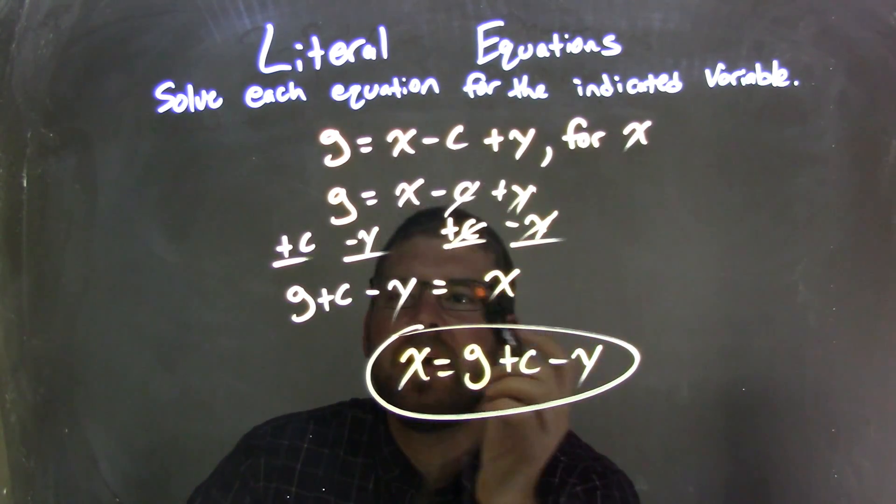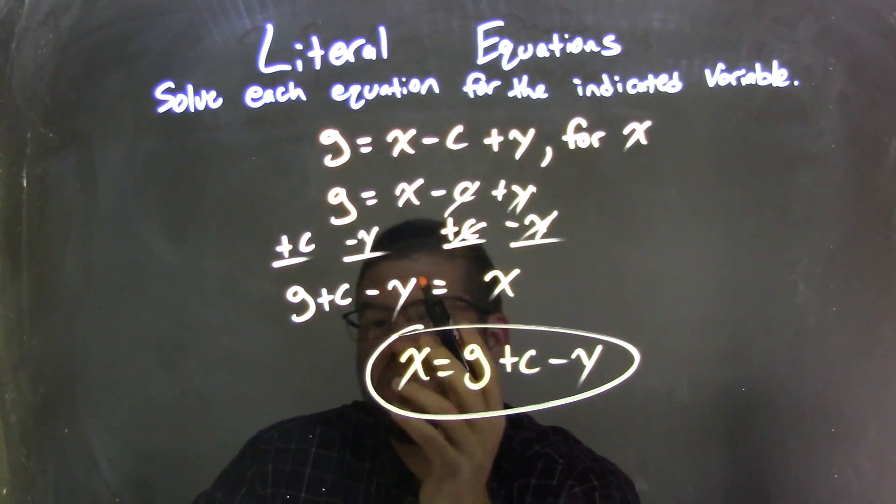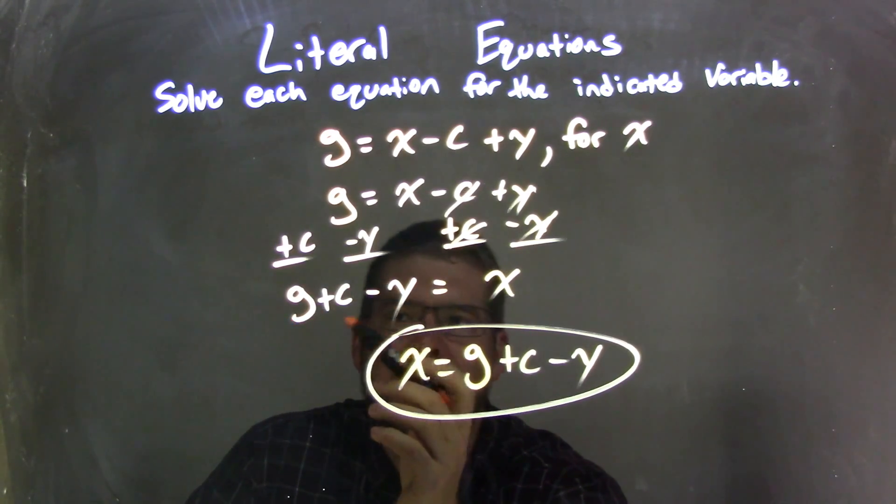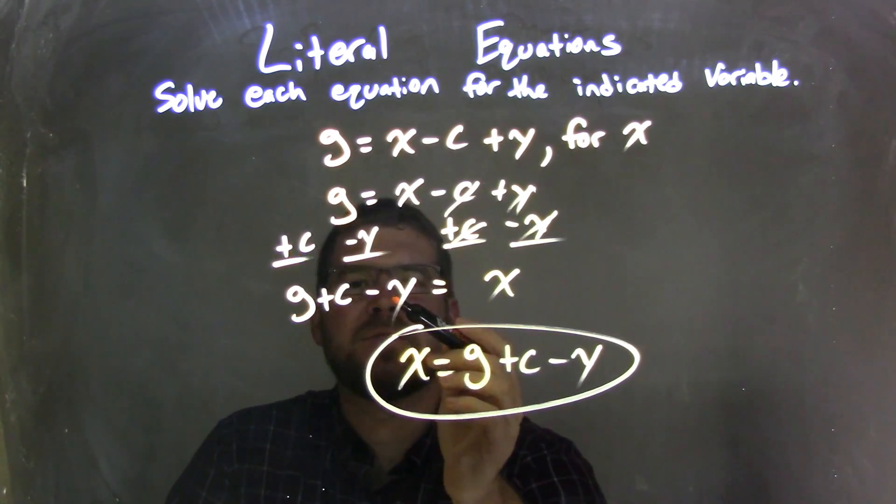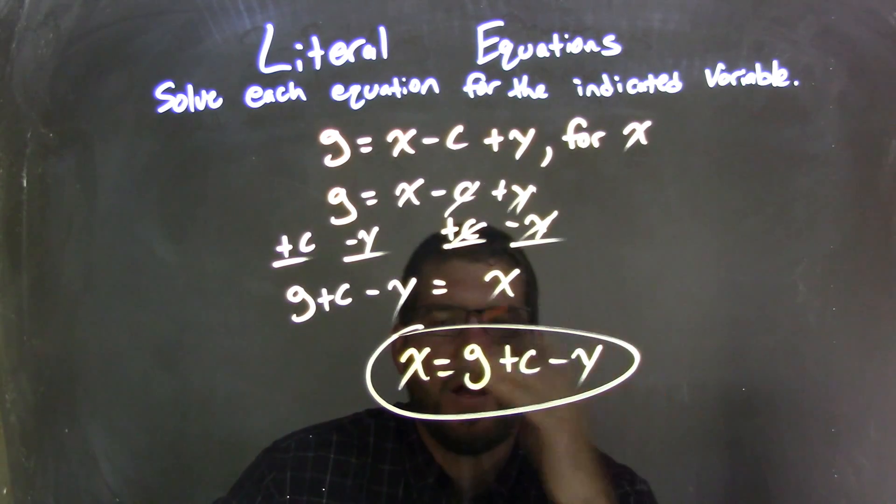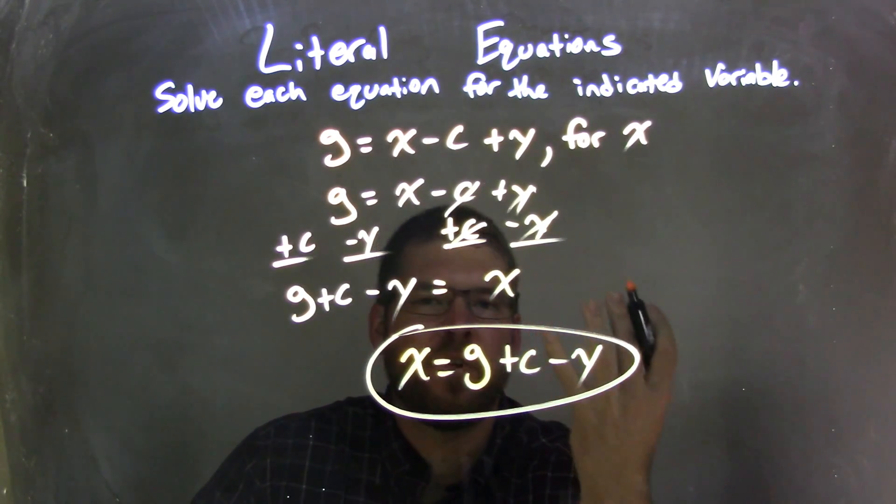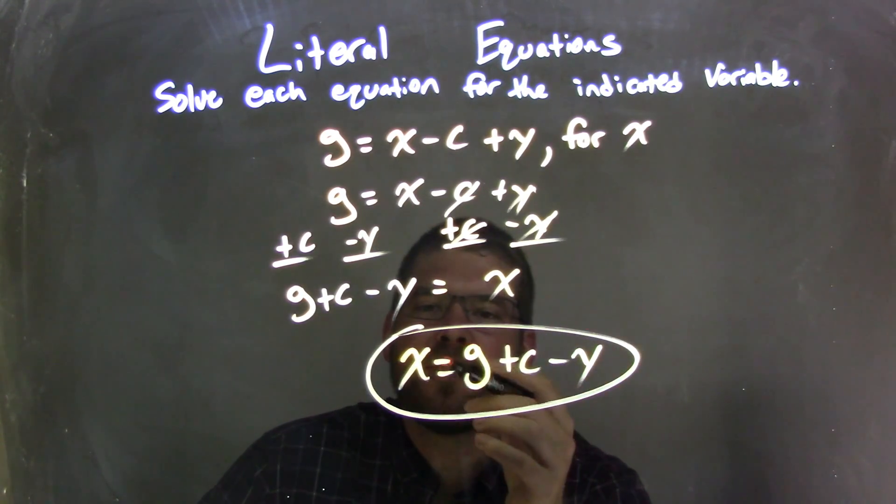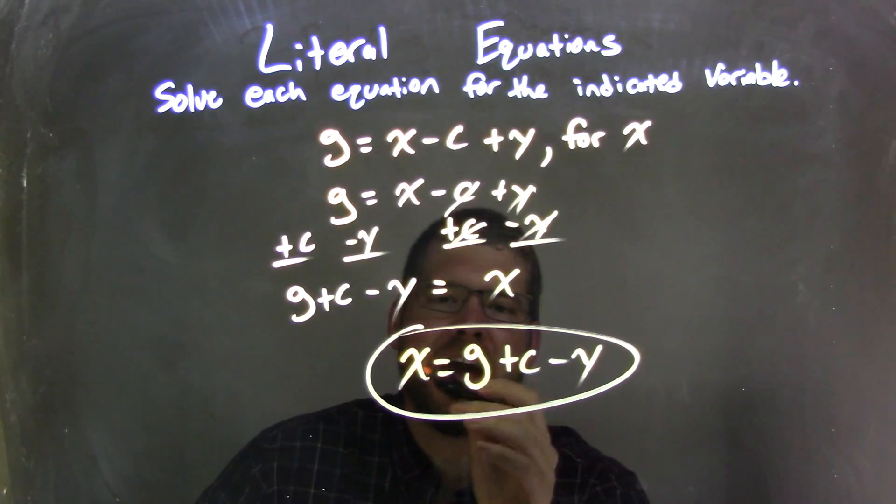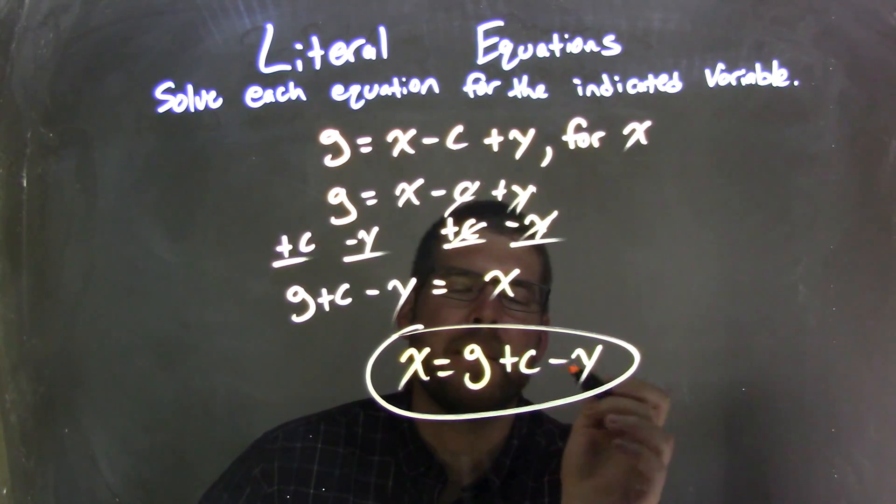That left me with x on the right, and then on the left-hand side, nothing can combine, so we just wrote it all out here, g plus c minus y, that equals x. And then I rewrote this, having x come first, because that looks nicer. So our final answer here is x equals g plus c minus y. We'll see you next time.